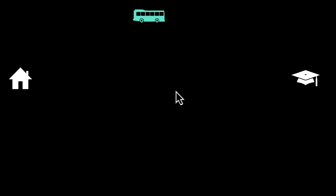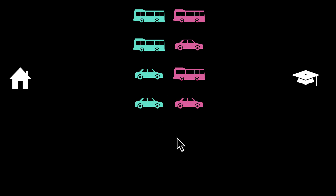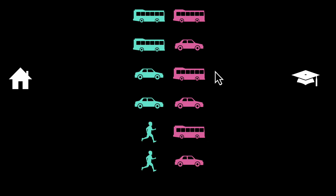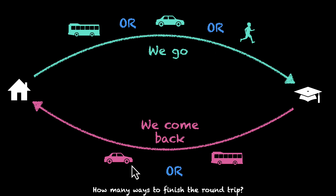Let me show you all six. From home to school you can take the bus, and coming back you can take the bus again — that's one option. Or you can take the bus going and the car coming back. Or you can take the car to school and come back by bus. Or take the car both ways. Or walk to school and come back by bus. Or walk and come back by car. That's one, two, three, four, five, six different ways to finish the round trip.